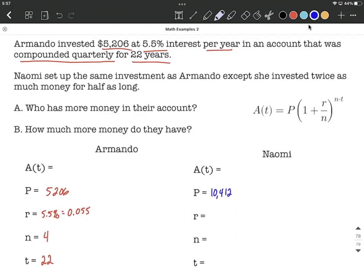Now the rate didn't change - it's still 0.055, 5.5% for her, also compounded quarterly or four times a year. But she invested twice as much for half as long, so her time frame has gone down from 22 years to only 11 years.